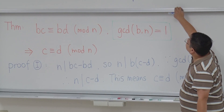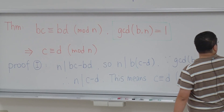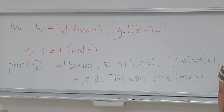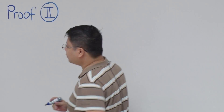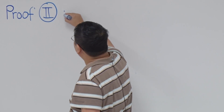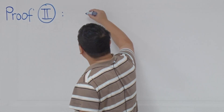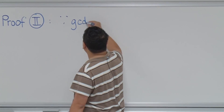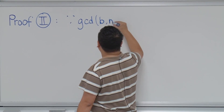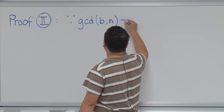Let's try to see a different proof — proof number 2. Personally, I like proof number 2 more. So because we have GCD of B and n equal to 1.